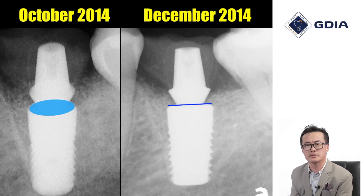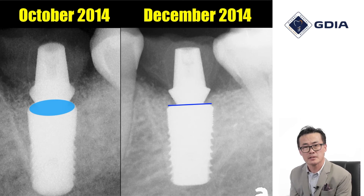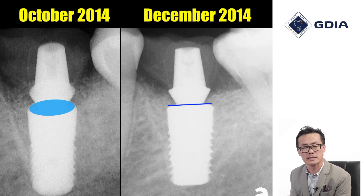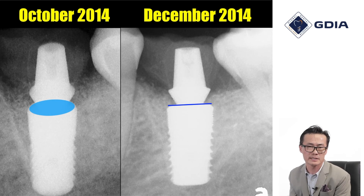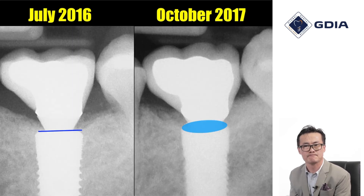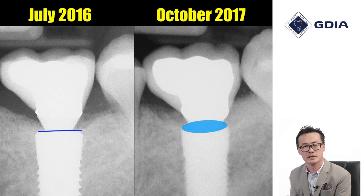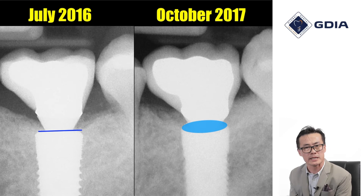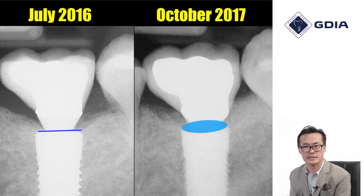When we compare these two images very carefully, the image on the left shows an oval at the interface whereas the image on the right shows a straight line at the interface between the implant and the abutment. The same thing is observed in this pair of images: on the left there's a straight line and on the right there's an oval at the interface between the implant and the abutment. What does that really mean?